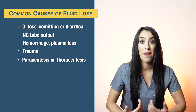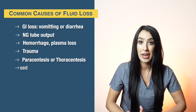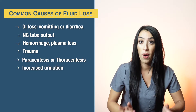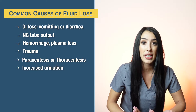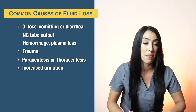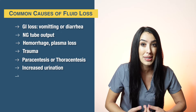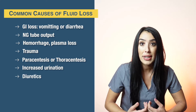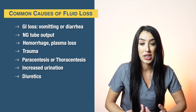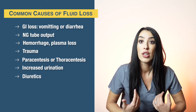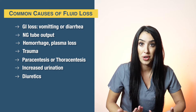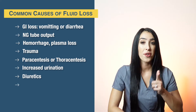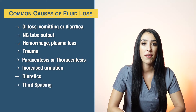Patients with increased urination — polyuria due to diabetes or diabetes insipidus — can also develop hypovolemia. When patients are on diuretics, which are medications that help lose volume and increase urine output, that is another contributing cause. Third spacing is another cause of hypovolemia.